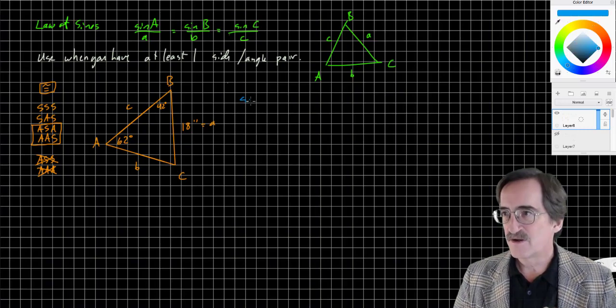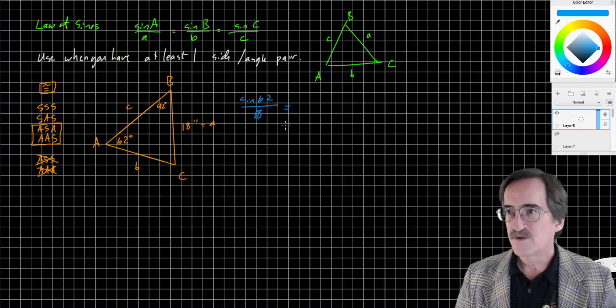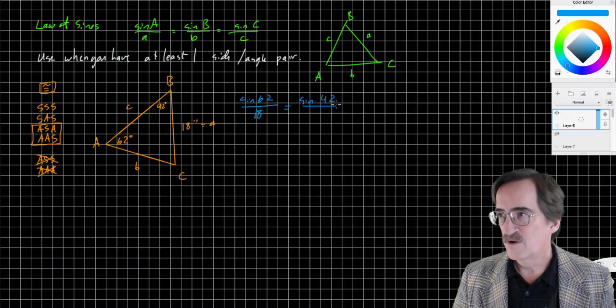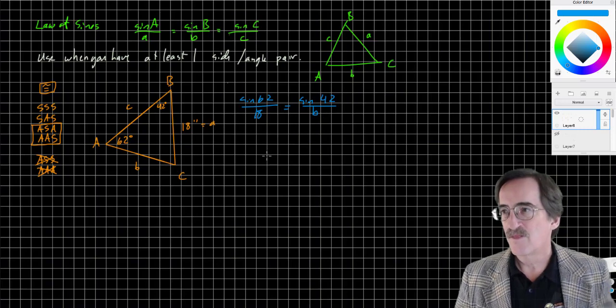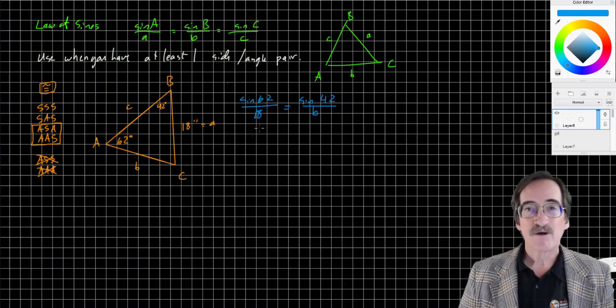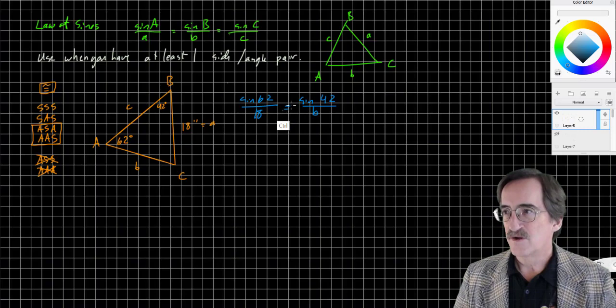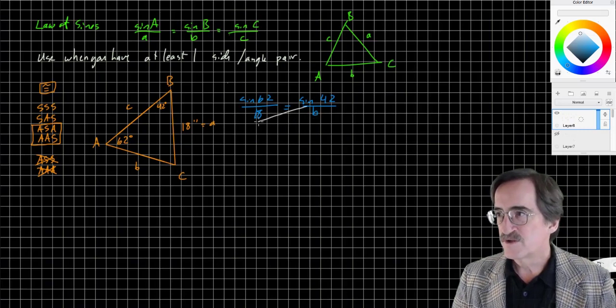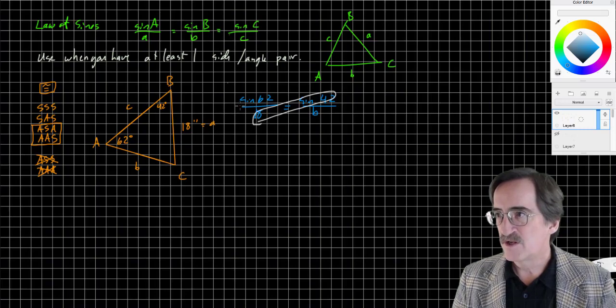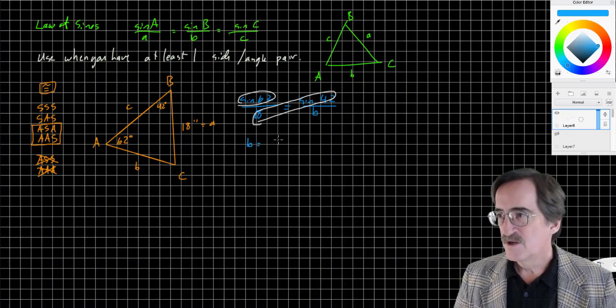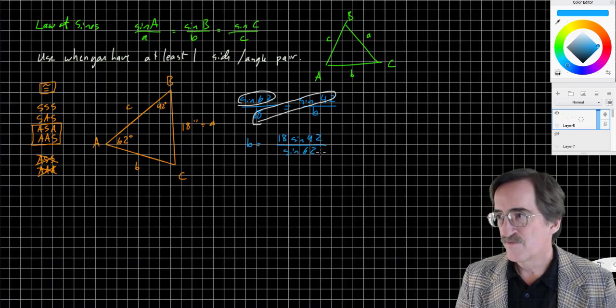Here's what the Law of Sines says: sine of 62 over its opposite side 18 equals, and I get to pick, I'm going to pick B, sine 42 over B. Now it's just a matter of solving the proportion. The way I like to think of it is B is the variable I'm going to solve for, so I'm going to multiply the diagonal B is not on and divide by the remaining side. So B is 18 sine 42 over sine 62.